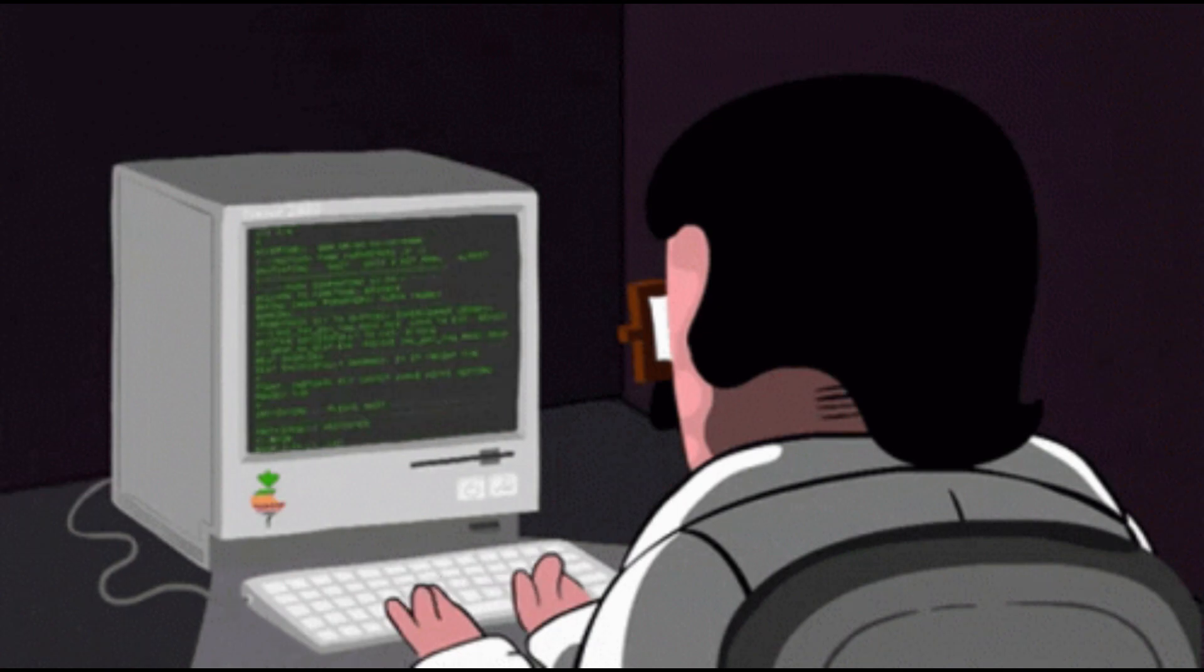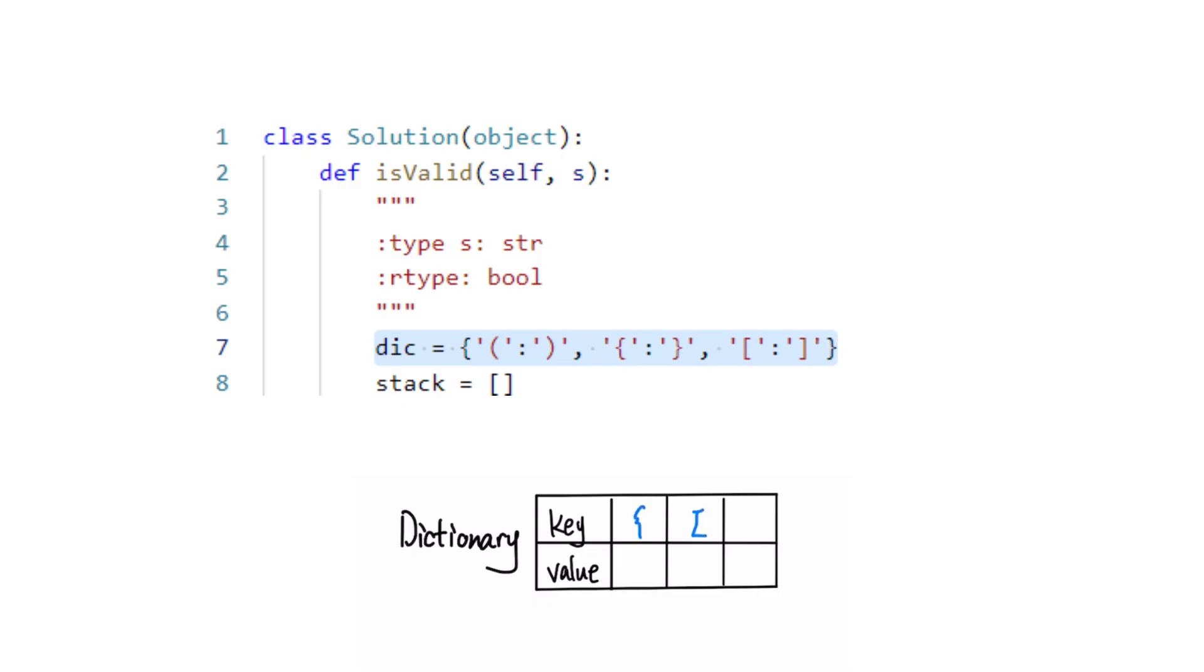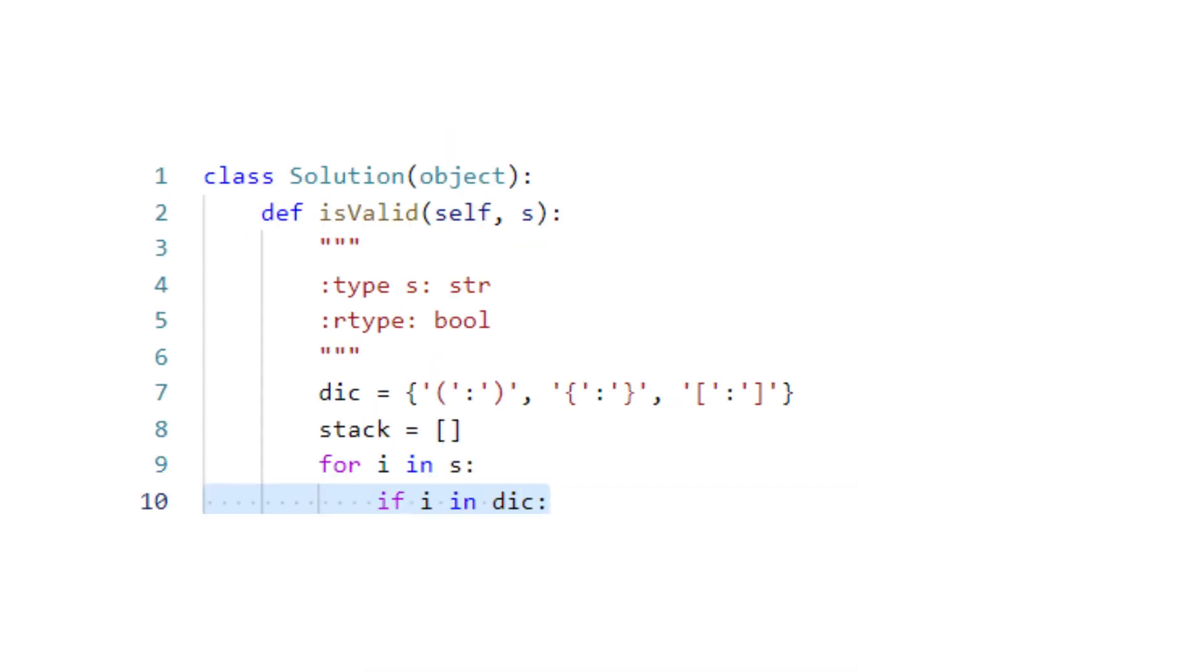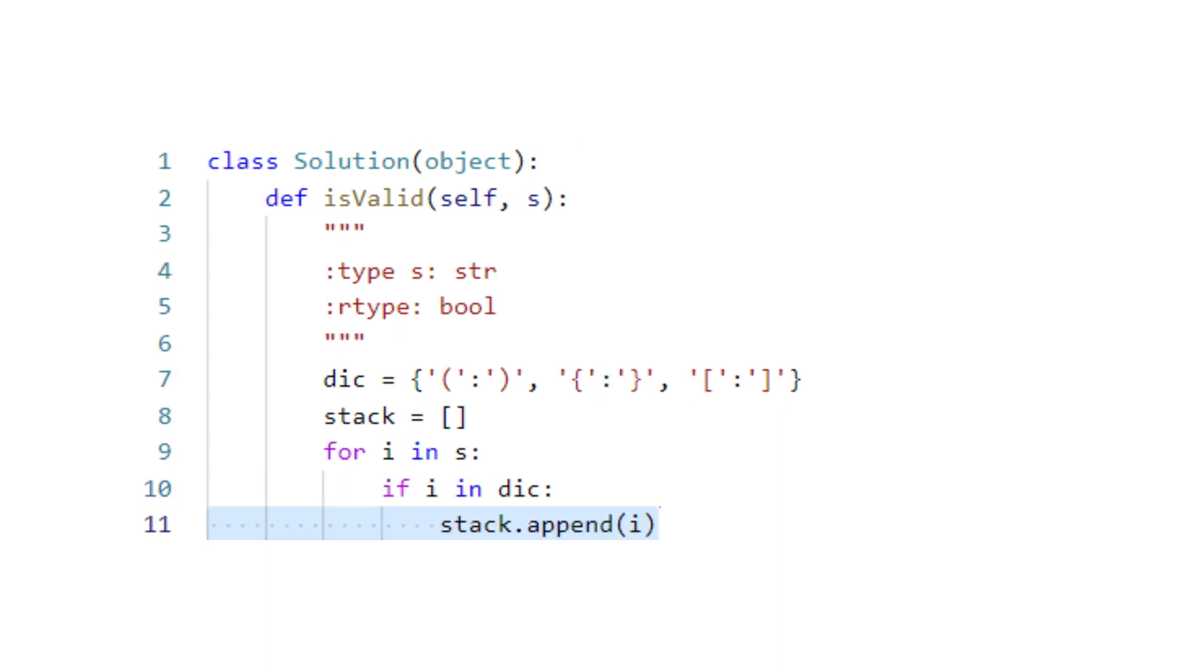To implement this solution, we can create a dictionary with open brackets as keys and closed brackets as values. We then iterate through the string and whenever we encounter an opening bracket that is a dictionary key, we push it onto the stack.